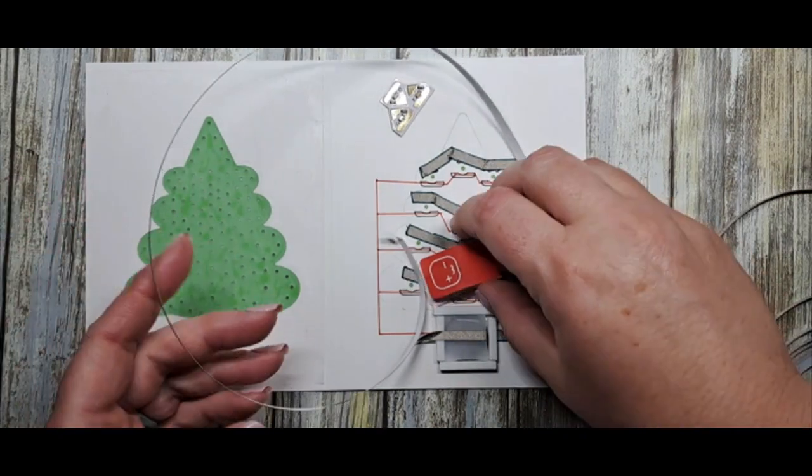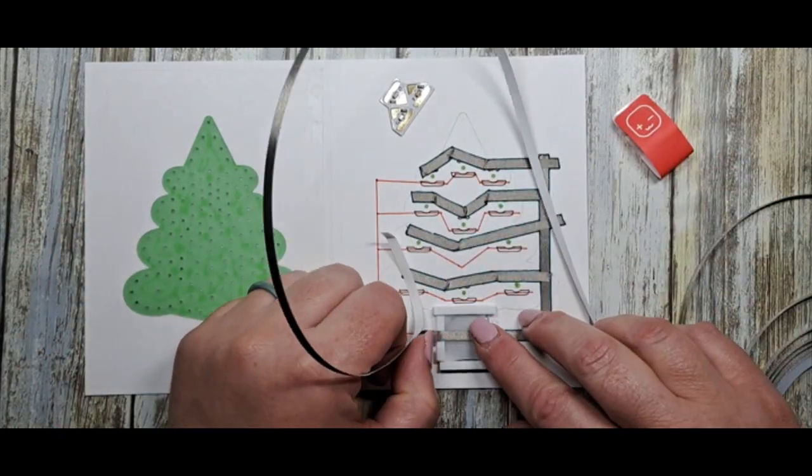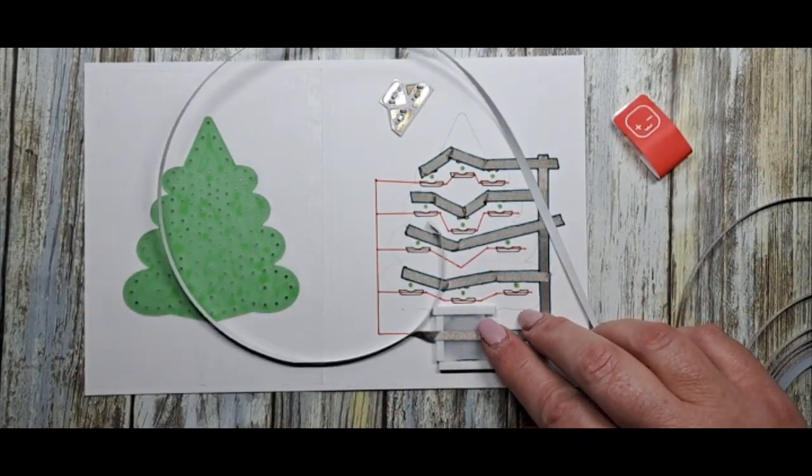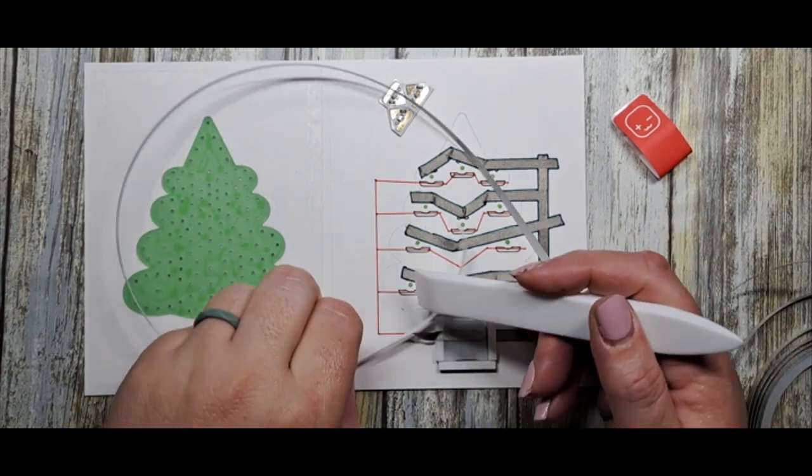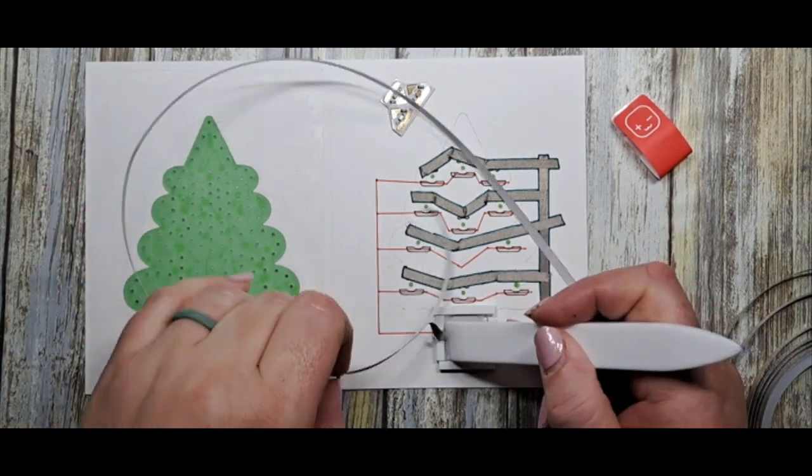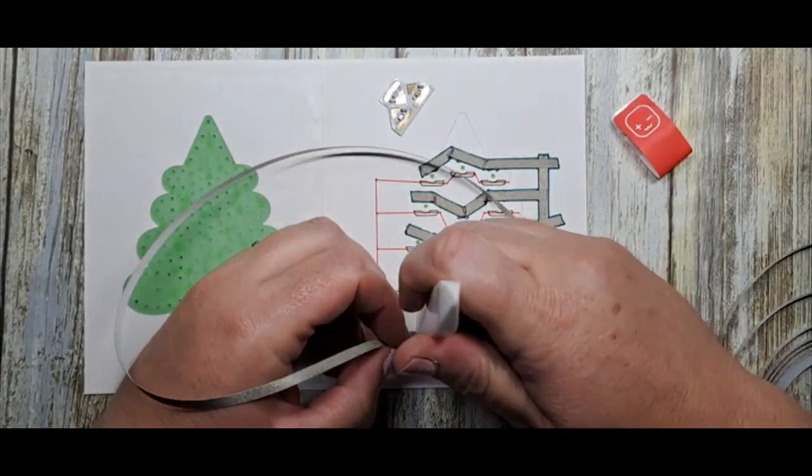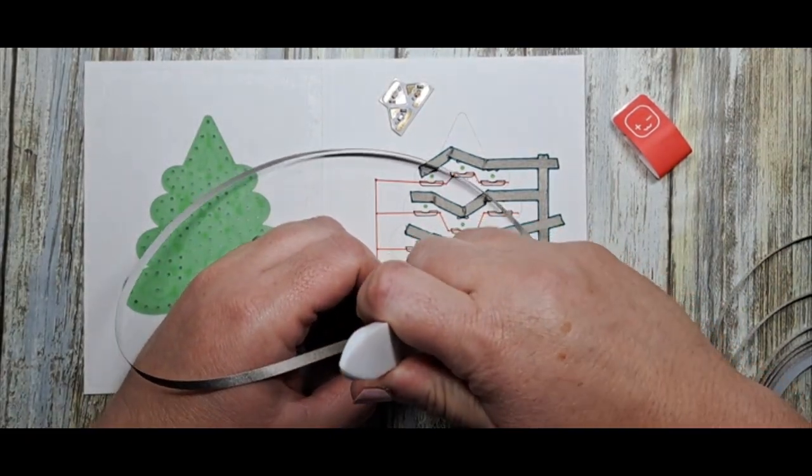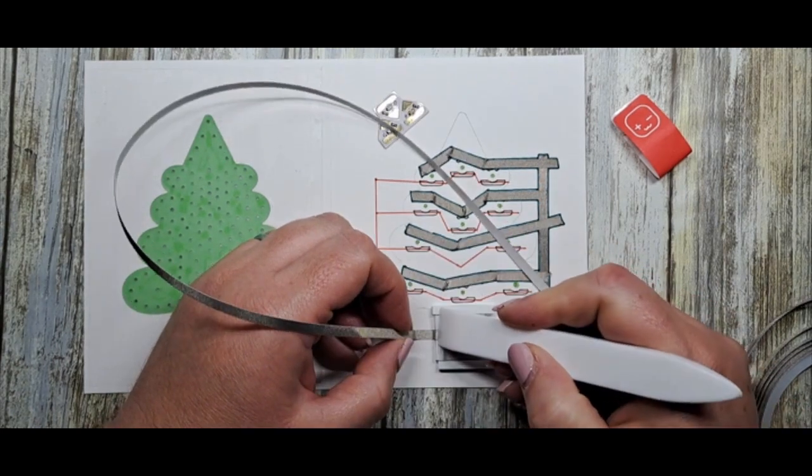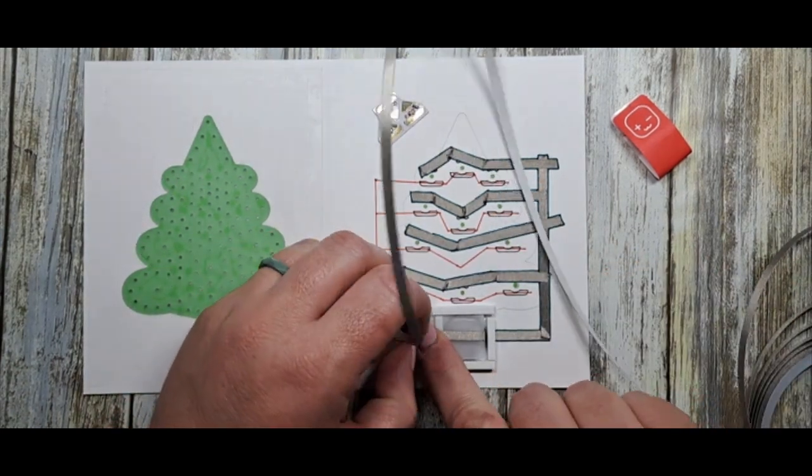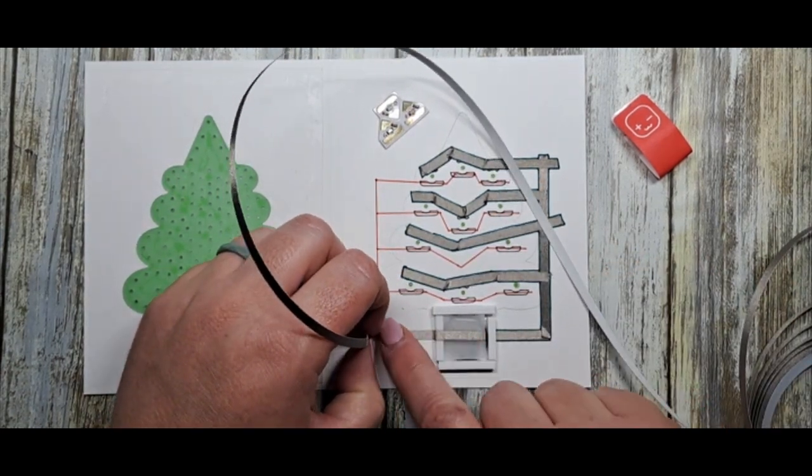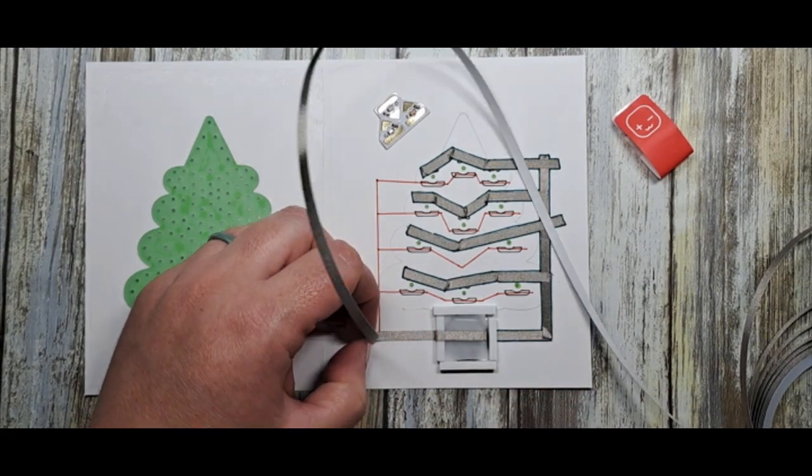And there we go. As you press that part of the card, it makes contact with the battery and voila, you light up your card. Now I tend to use a bone folder to take this conductive fabric tape down the side of my foam. Just like the negative side of the circuit, I'm just going to follow those red lines. Let's finish up that circuit.